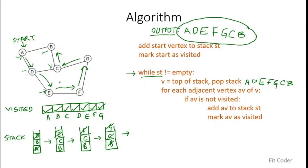One thing to notice is that at each point you have multiple options for the order in which to push elements. For example, at A you can push B first or D first; at D you can push C or E first. The order in which you push determines the traversal order, so there is no single fixed DFS traversal — multiple valid DFS traversals exist for the same graph.